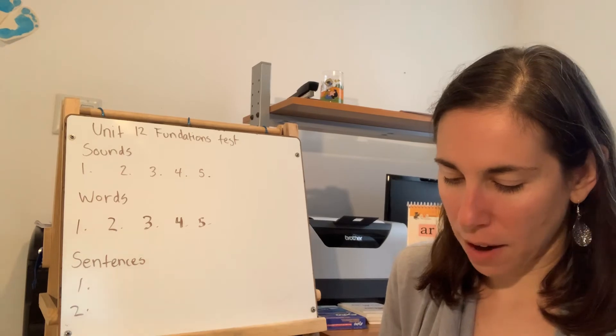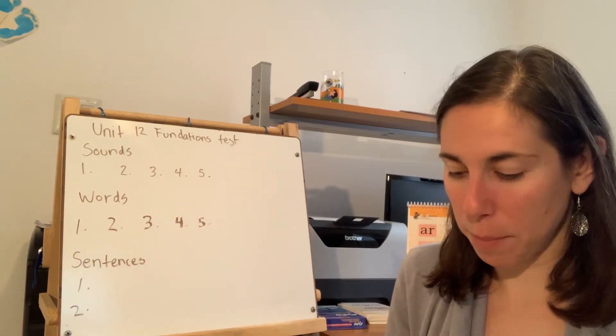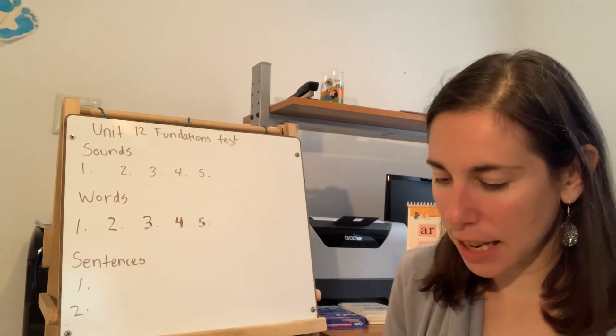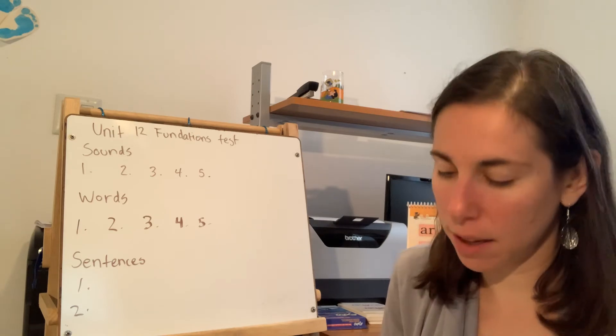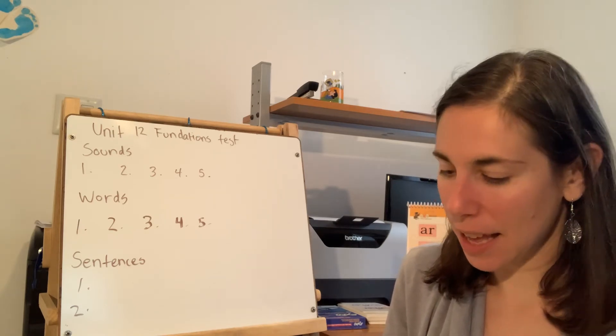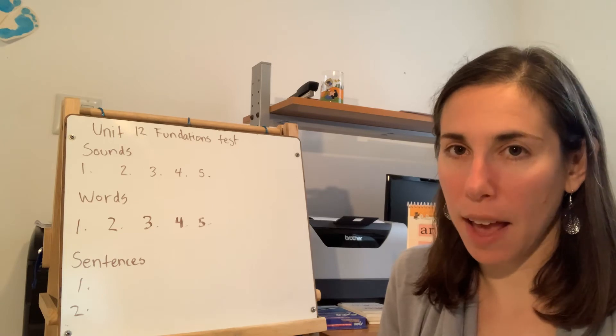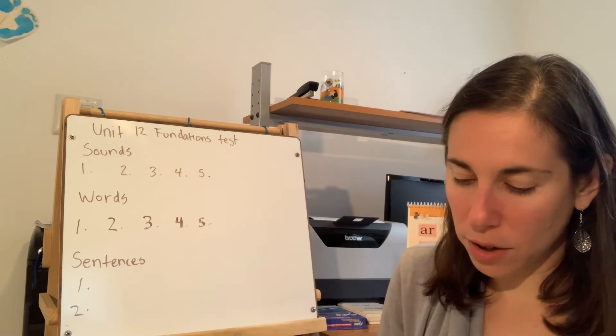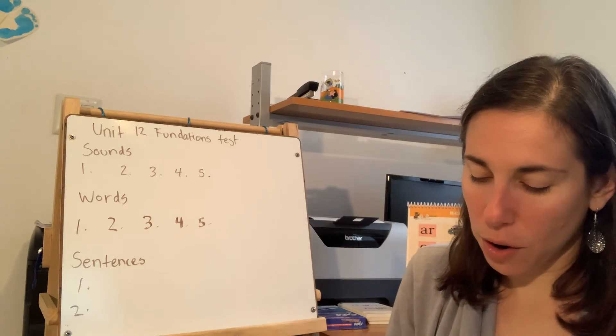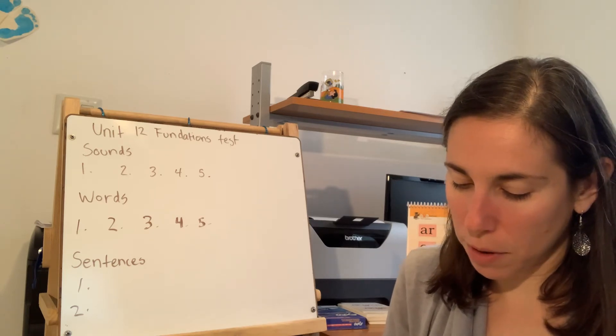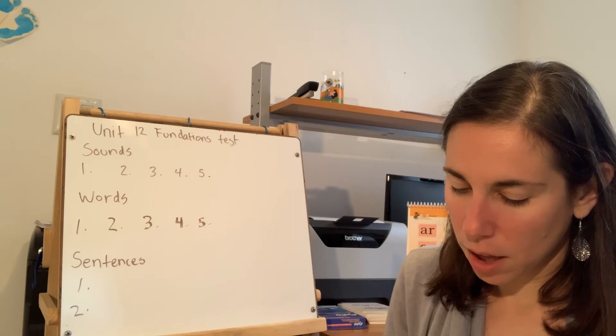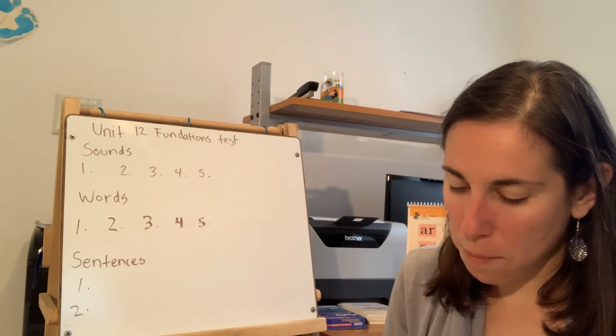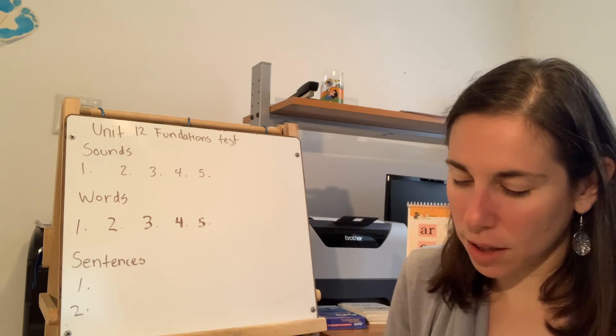Okay, number one was upset, number two admit, number three public, number four dislike, and number five reptile. I would like you to scoop or underline your words into two syllables and mark them. This says circling suffixes but there were no suffixes.